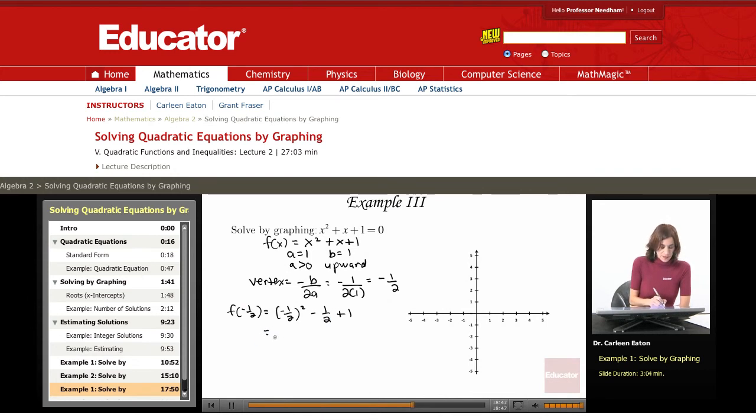That's negative 1 half times negative 1 half, which gives me positive 1 fourth minus 1 half plus 1. That gives me 1 fourth minus 1 half is negative 1 fourth plus 1. 1 minus 1 fourth is 3 fourths. So my vertex is negative 1 half, 3 fourths.